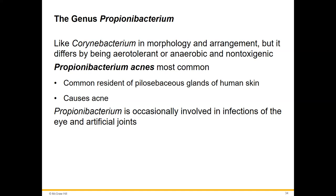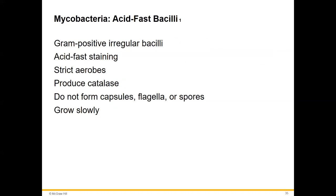Propionibacterium is similar to Corynebacterium. The most common condition is Propionibacterium acnes, associated with acne vulgaris. It's in our sebaceous glands as normal flora, but when the skin gets disrupted or irritated, or with increased sebum production, this bacteria can overgrow. You could also see infections of the eye and artificial joints, but really associate this with acne.